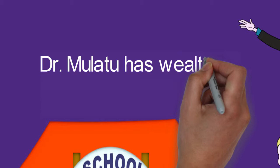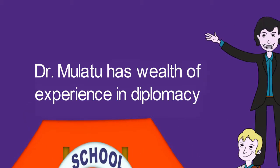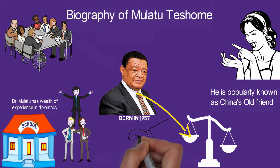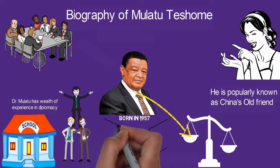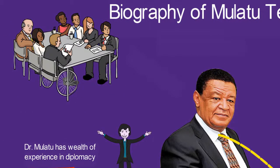Dr. Mulatu has wealth of experience in diplomacy from serving as Ethiopia's ambassador to countries like China, Japan, Turkey, and Azerbaijan. His ability to speak Mandarin gave him an edge in China, and to date, Ethiopia has a great relationship with China because of him.